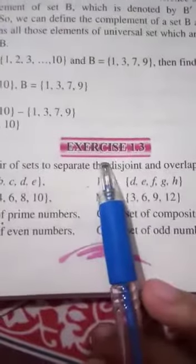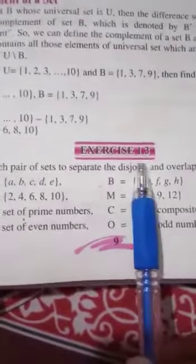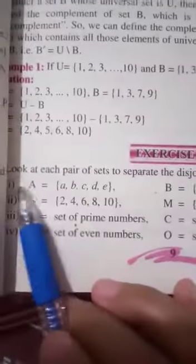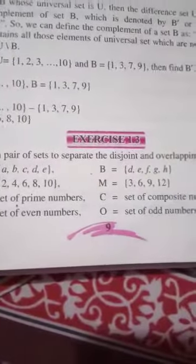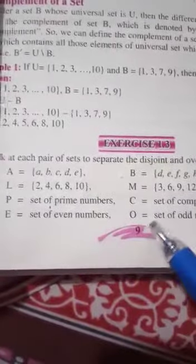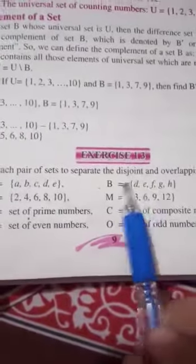Now let's see exercise 1.3. We have done these four definitions. Next, question number one: Look at each pair of sets to separate disjoint and overlapping sets. You will need to tell disjoint sets and overlapping sets. If you remember,